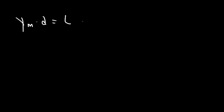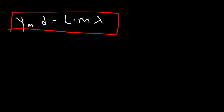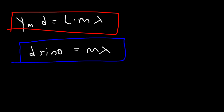Remember, for these types of problems there are only two formulas you need. First: y_m · d = L·m·λ — use this only when theta is very small, which it usually is for these problems. Second: d·sinθ = mλ — you can always use this; just make sure theta is in degrees. If you're not given an angle, you'll likely use the first formula.